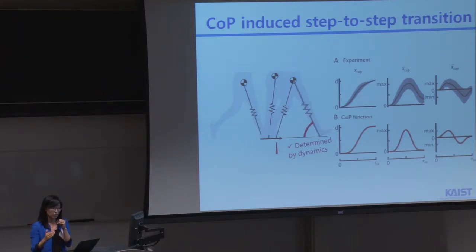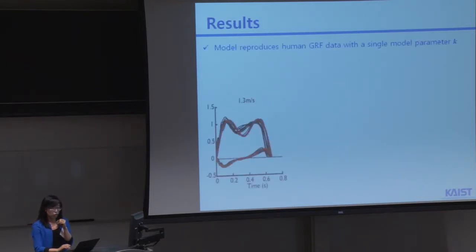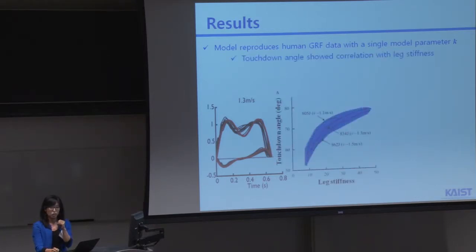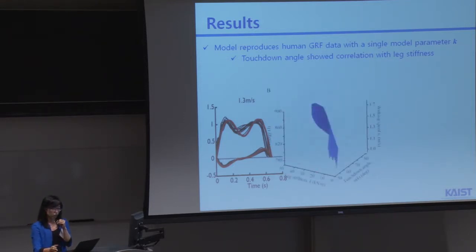So in this case, the touchdown angle is not a predetermined independent variable anymore, and it is calculated from the dynamics. Results show that the proposed model could reproduce the human and GRF data for various gait speeds pretty well with a single model parameter K. And we also observed that the touchdown angle showed a high correlation with the leg stiffness. And then when we convert the coordinate from the independent leg stiffness to the dependent touchdown angle, our results are pretty much coherent to the observation what we can get when we set the touchdown angle as a free scan parameter.